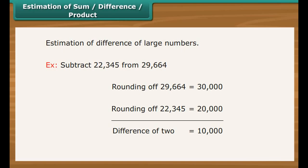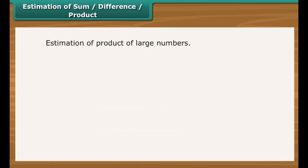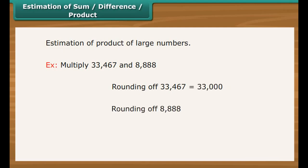Estimation to nearest number can help in the estimation of the product of two large numbers. For example, multiply 33,467 and 8,888. Rounding of 33,467 is equal to 33,000. Rounding of 8,888 is equal to 9,000. Product is equal to 33 into 9 followed by six zeros, which is 29 crore 70 lakhs.